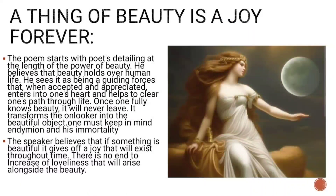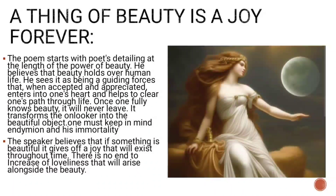The poem starts with the poet detailing the power and beauty he believes holds over human life. He sees beauty as a guiding force — once it is accepted and appreciated in one's heart, it helps to clear one's way through life. Once one fully knows beauty, it will never leave. It will change one's perspective, and every object will start to look beautiful. The speaker believes that if something is beautiful, it is a joy for life, and there is no end to that beauty — it will always be eternal.